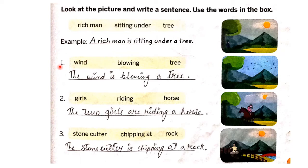Now number one: wind blowing a tree. The wind is here and the tree is here. So what will be the sentence? The sentence will be: The wind is blowing a tree.